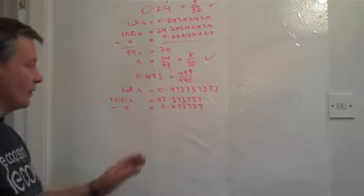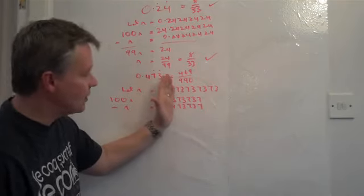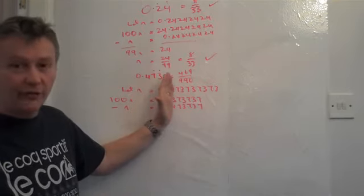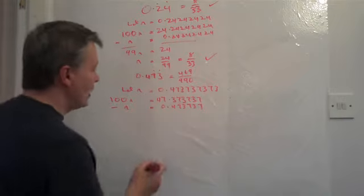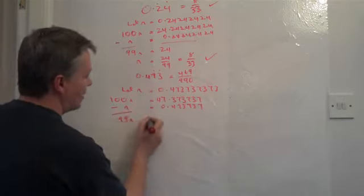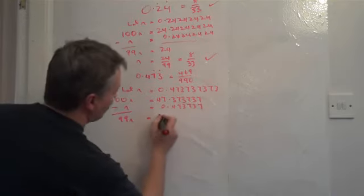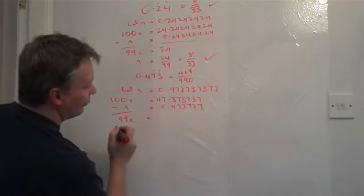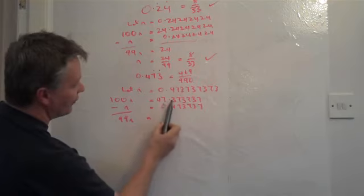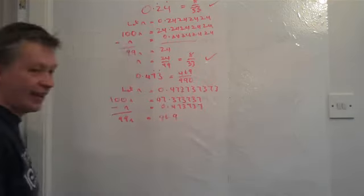OK. So what we're left with is this bit, the right hand side, so 737373 recurring, can be taken one away from the other in order to cancel it down. So I'm left with this side, 99N as before, and this side, I'm left with 47.3 take away 0.4. So those get cancelled out, and 47.3 take away 0.4, which is 46.9.